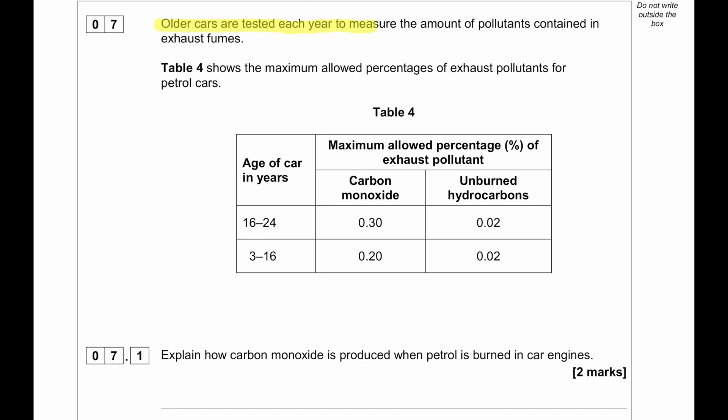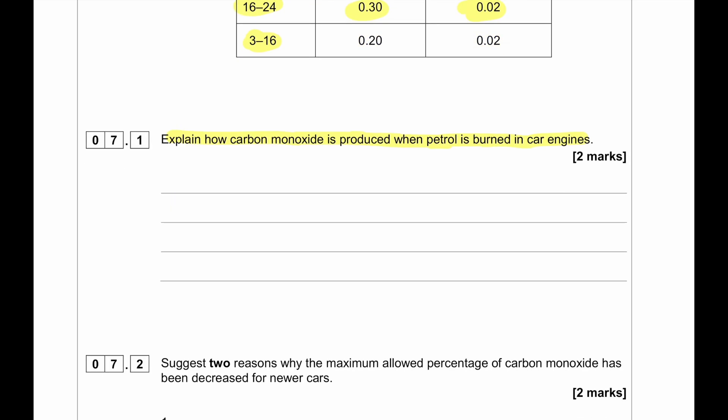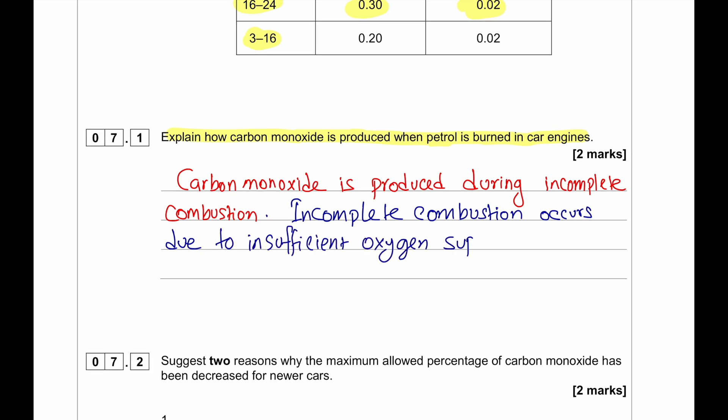Older cars are tested each year to measure the amount of pollutants contained in exhaust fumes. Table 4 shows the maximum allowed percentages of exhaust pollutants for petrol cars. Explain how carbon monoxide is produced when petrol is burned in car engines. In terms of producing carbon monoxide, when petrol is burned in incomplete combustion, in insufficient supply or limited supply of oxygen, then carbon monoxide is produced.